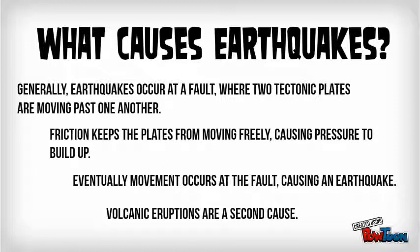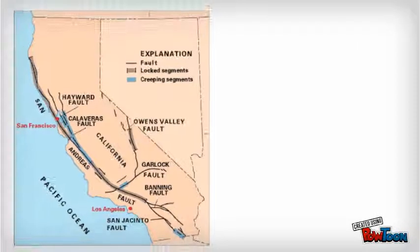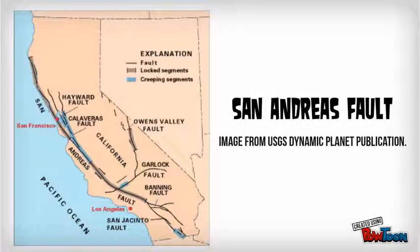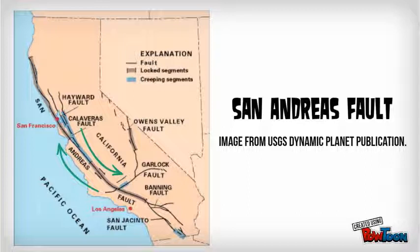Volcanic eruptions are also a second cause of earthquakes. In this picture we see the San Andreas Fault. You can see that the fault on the eastern side is moving south, whereas the fault on the western side is moving north — so they're moving in opposite directions.